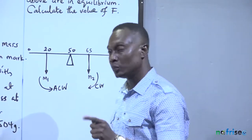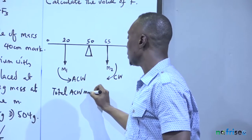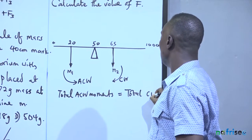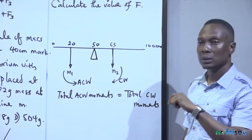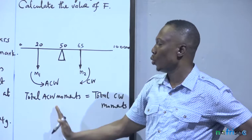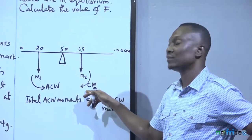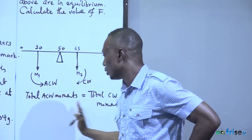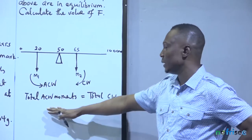First, the rule: total anticlockwise moments equals total clockwise moments. This is another way of saying the sum of the moments about the pivot is zero. If you add all the moments on one side of the equation, you put a positive sign on the anticlockwise moment and negative sign on the clockwise moment, which gives you zero. Most students prefer it this way.